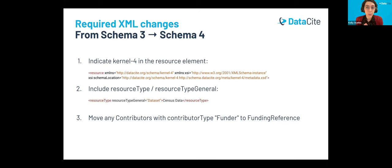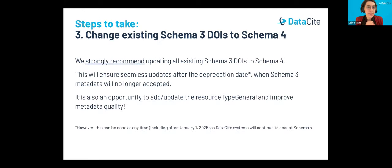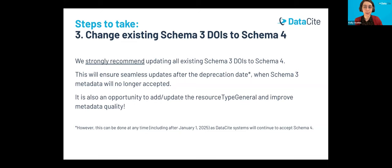Once you've made these three changes, your metadata will be compatible with schema 4, and you can push those updates to your DOIs. The last step is to change your existing schema 3 DOIs to use schema 4. We strongly recommend this even if your system is already updated to use schema 4, to ensure seamless updates once schema 3 metadata is no longer accepted. This step can technically be done at any time, including after the deprecation date. We're recommending you start now to avoid any surprises. For example, if your system is using existing schema 3 metadata as a basis for updates, you'll likely run into problems at deprecation unless you're proactively planning for those updates to use schema 4 going forward. There's also an opportunity to add or update resource type general and review your overall metadata quality.